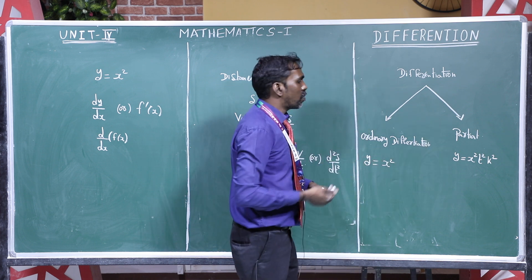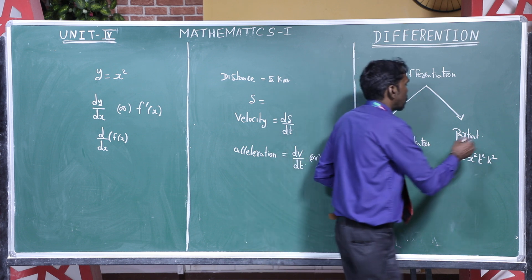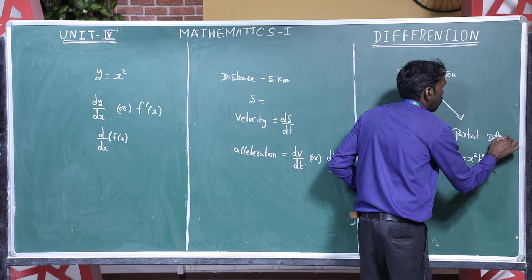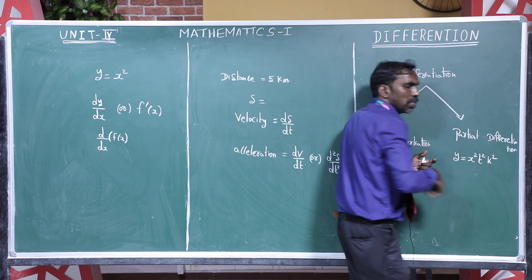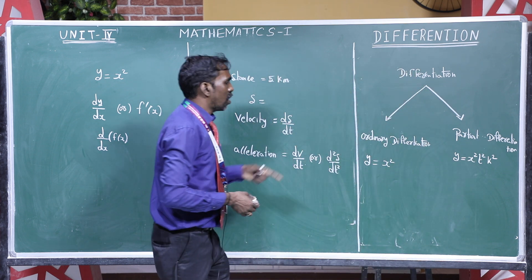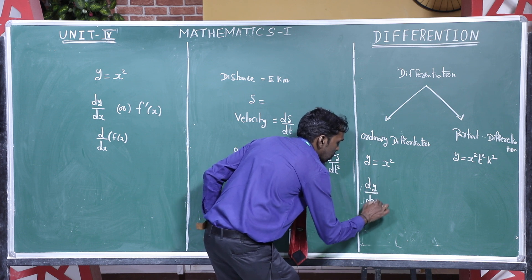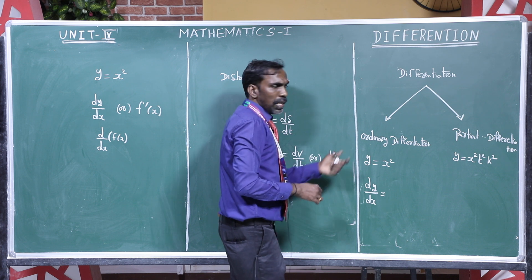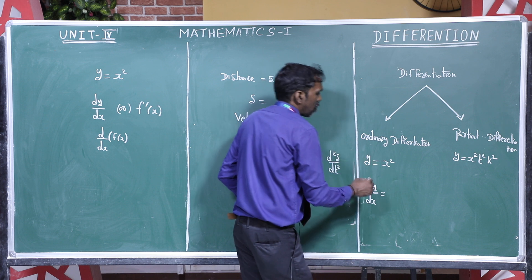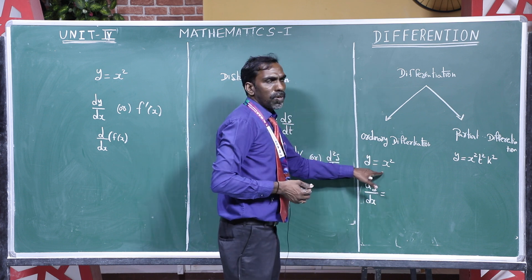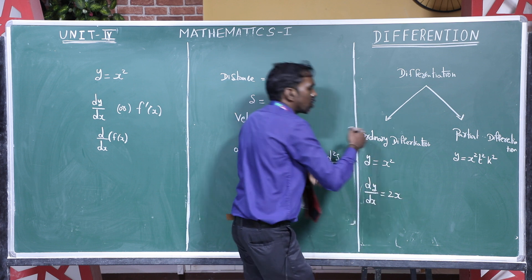When a function has more than one independent variable — for example, y equal to x square plus t square plus k square has three independent variables — this is called partial differentiation. For ordinary differentiation we use the notation dy by dx, and applying the x power n formula: differentiation of x square gives 2x.